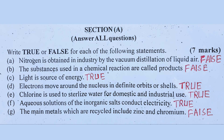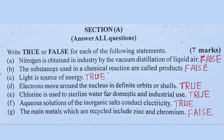Number 2, Number 8: The alkali metals tarnish rapidly in air, forming a layer of oxides.